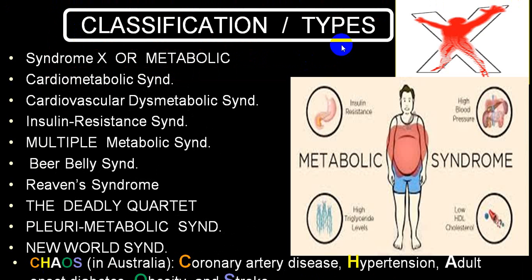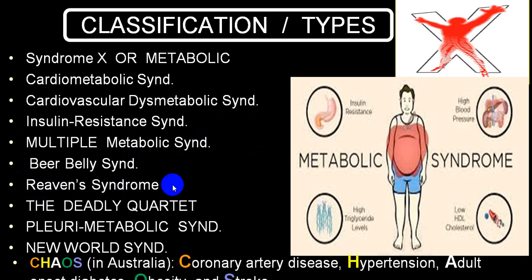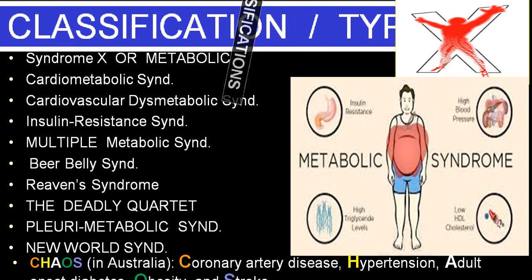There are a few terms commonly used interchangeably: syndrome X, metabolic syndrome, or cardiometabolic syndrome. Other terms include cardiovascular dysmetabolic syndrome, insulin resistance syndrome, multiple metabolic syndrome, bare belly syndrome — the first name given by the scientist Reaven, called Reaven syndrome — then 'deadly quartet' because there are four components, Furry metabolic syndrome, new world syndrome, and 'CHAOS' used in Australia: C for coronary artery, H for hypertension, A for adult-onset diabetes, O for obesity, and S for stroke. The most commonly used terms remain syndrome X, metabolic syndrome, and cardiometabolic syndrome.